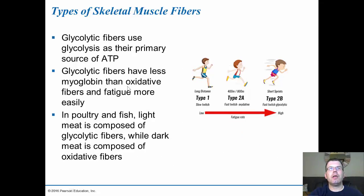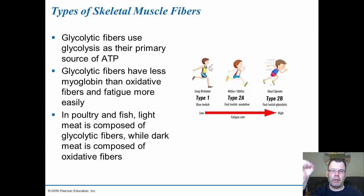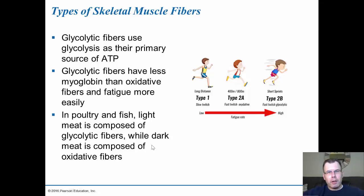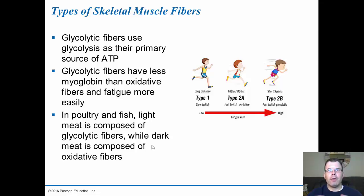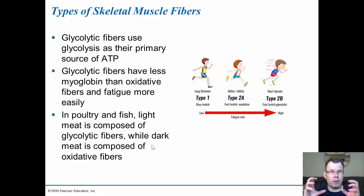Glycolytic fibers only use glycolysis — the first step of aerobic respiration — producing only 2 ATP versus the 38 generated during full aerobic respiration. They have less myoglobin and fatigue easily. In poultry and fish, light meat is composed of glycolytic fibers and dark meat of oxidative fibers — dark meat is in the wings and legs, which need lots of ATP to move, while white meat is in the breast where less energy is needed. The wings and legs are more flavorful and slightly richer due to the mitochondria and aerobic respiration.